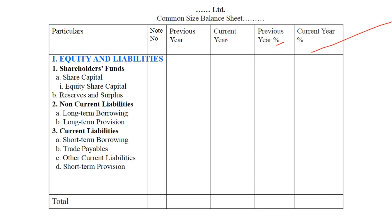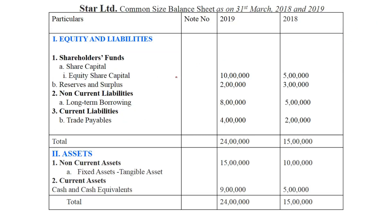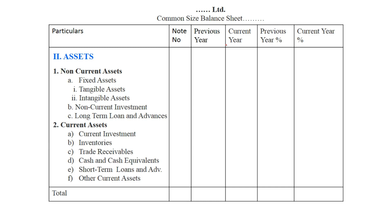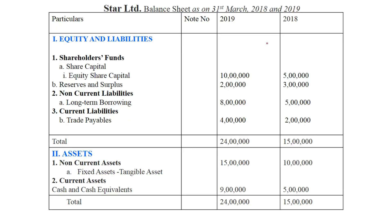There are two companies — inter-firm and intra-firm comparisons are also done, but only year-wise in your course. So we have taken a year. Now let's take one question. Please first solve the question from the previous video — balance sheet or statement of P&L. This is the balance sheet of Star Limited. Now we have to prepare the common size statement.